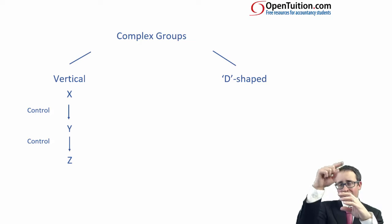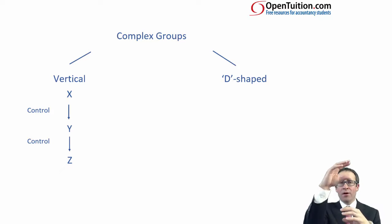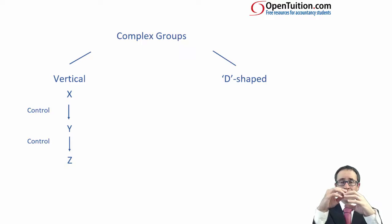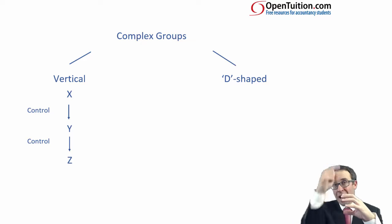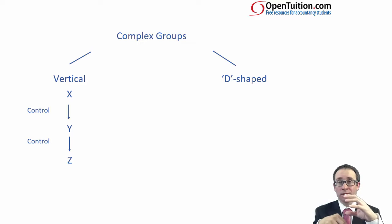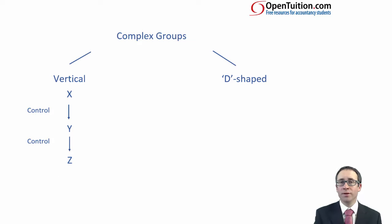Indirectly, this parent not just controls the sub but also controls the sub-subsidiary — effectively a sub-sub — because if the parent can put the directors in the sub due to control, and the sub has control over the sub-sub, then we can put our directors in the sub-sub as well. We effectively indirectly control that sub-subsidiary. So we have a vertical group structure: parent, sub, sub-subsidiary.